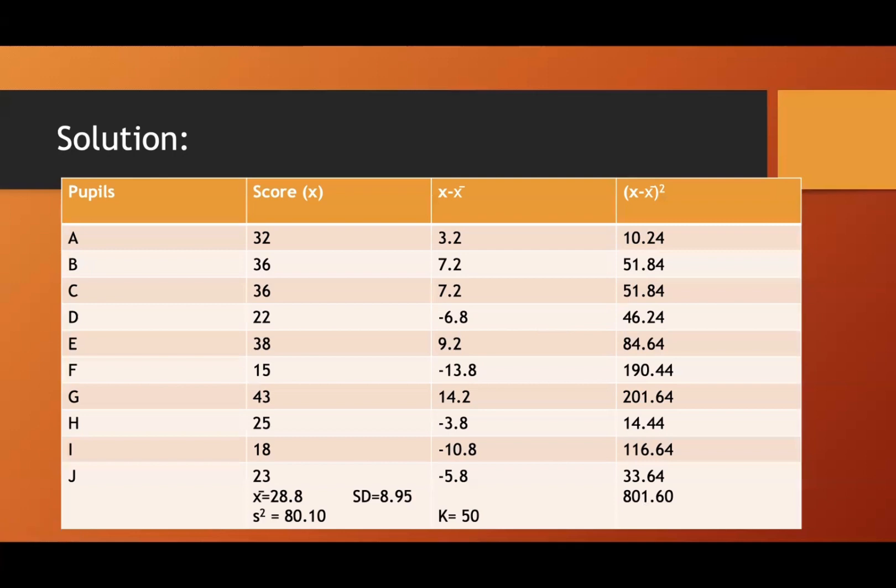As we recall, the standard deviation is the square root of this mean deviation. So you get the total here. The total is 801.60. And then square root of the mean deviation, which is this one, you get the sum here, divided by the N, there are 10.